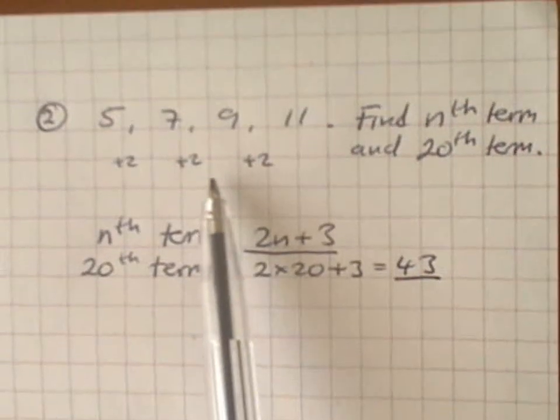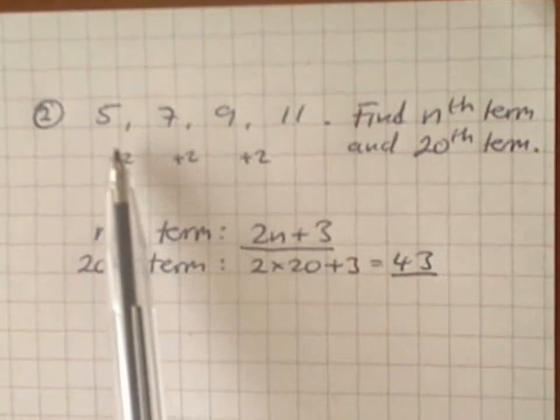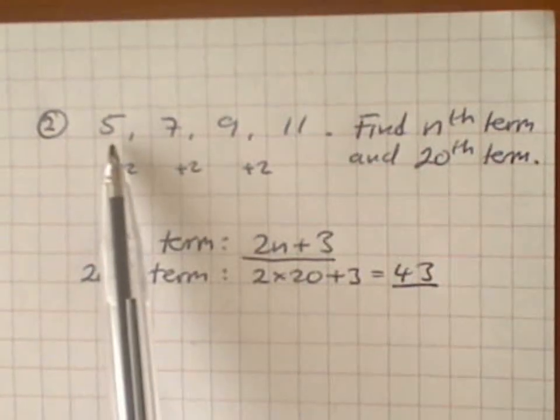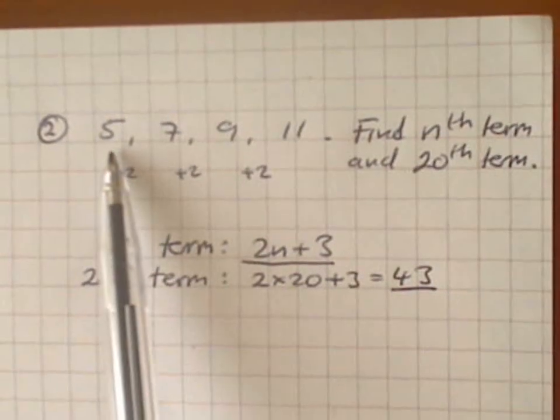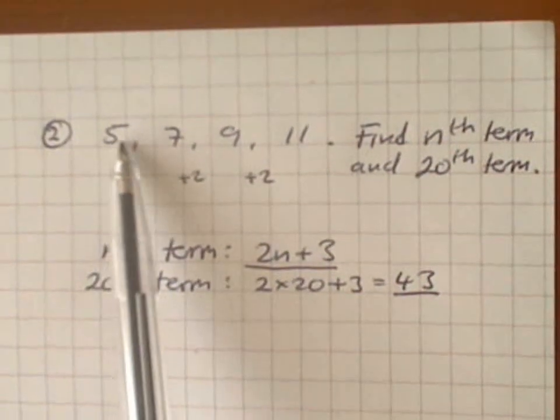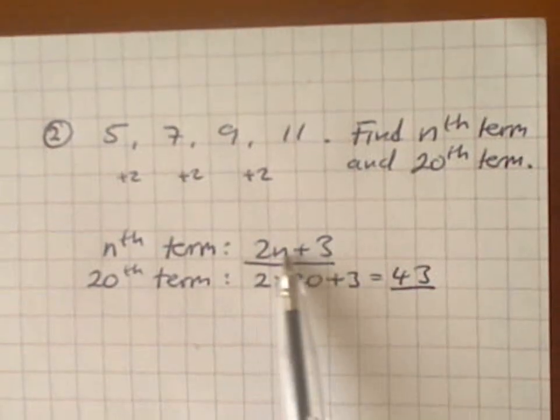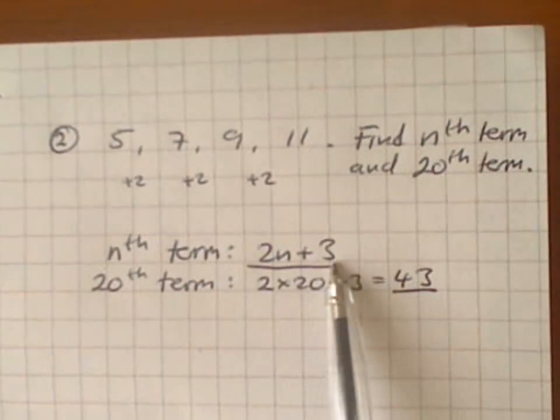But the two times table doesn't look like this. The two times table begins with two, not five. So, this is three more than the two times table. That's why I wrote 2n plus three. The two times table plus three. That's the nth term.